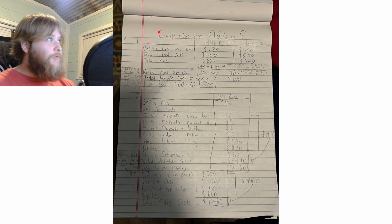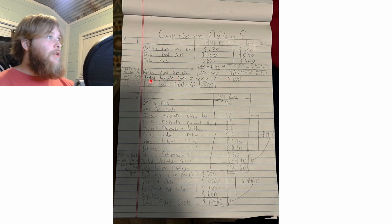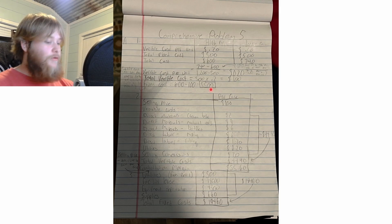So that's where you get the variable cost per unit. The total variable cost is 500 times the 20 cents we got, which equals $100. Then you take the fixed cost from the low point — $600 — minus the total variable cost of $100, which equals $500.